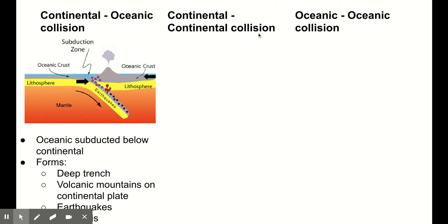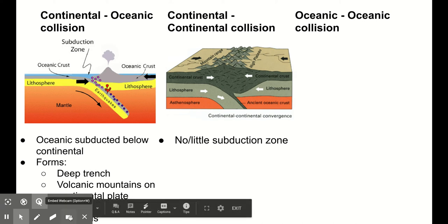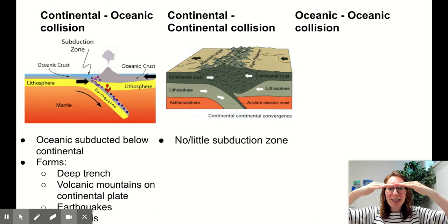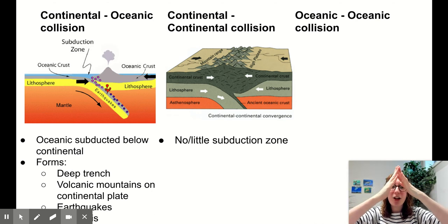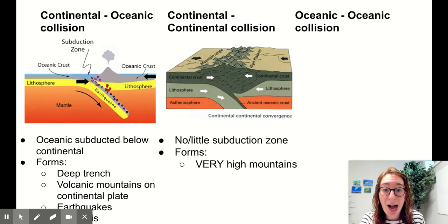Our second type of convergent plate boundary is a continental-continental collision — two continental plates converging together. Here there's typically no subduction zone or very little. Subduction zones take a very long time geologically to form in a continental-continental collision because both plates are so not dense — they're pretty buoyant and stay high up. If you look at my two hands as the continental plates, they hit each other and just kind of push each other upwards. These continental-continental plates are where we see by far our highest mountains.